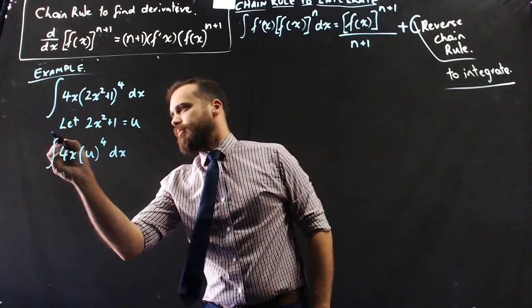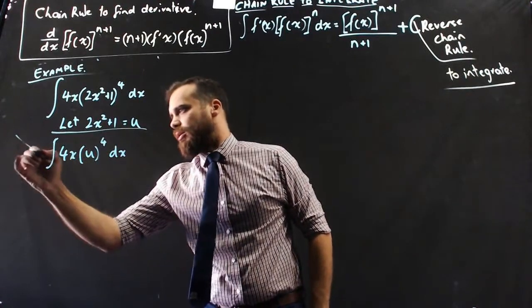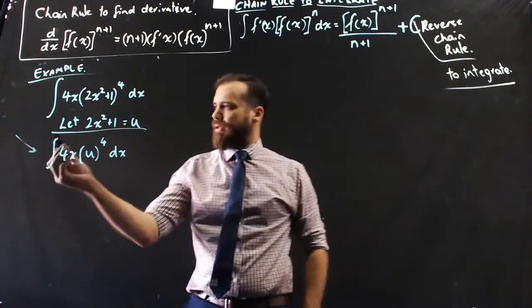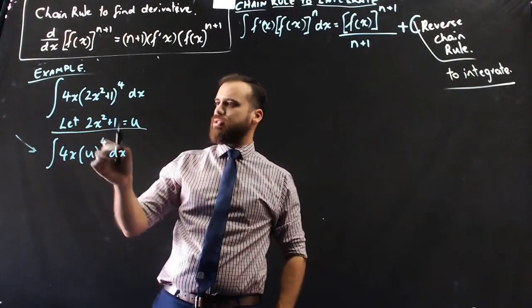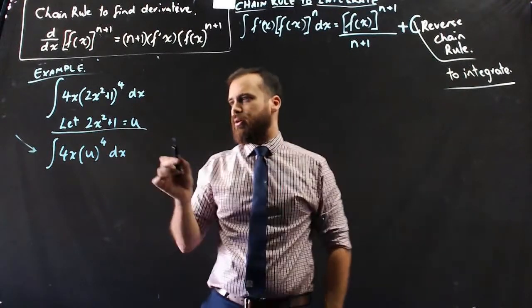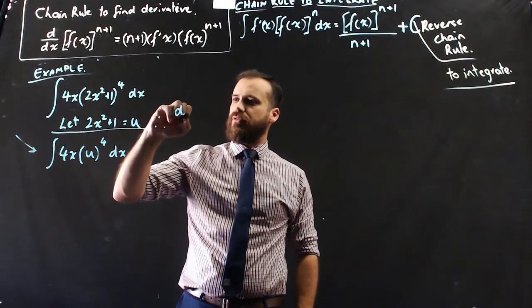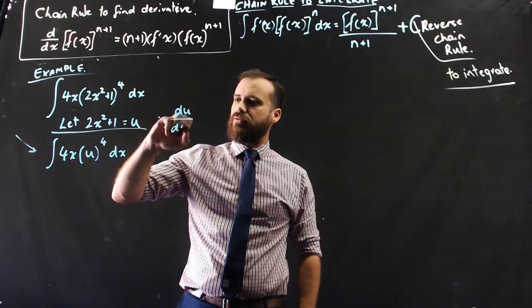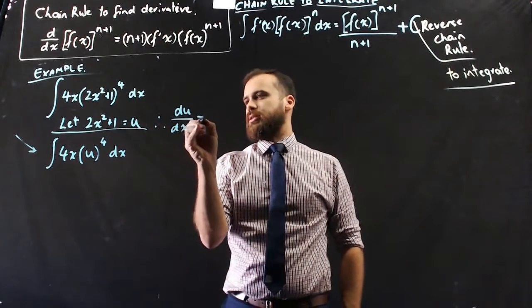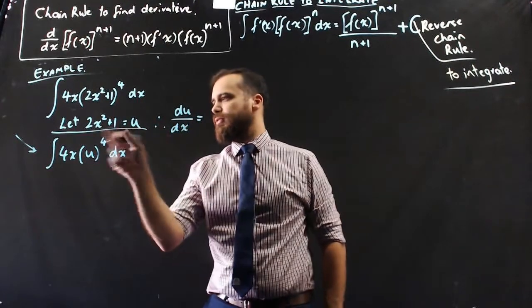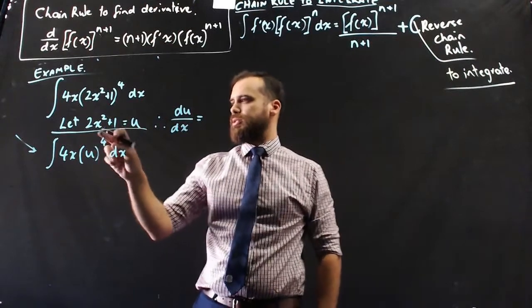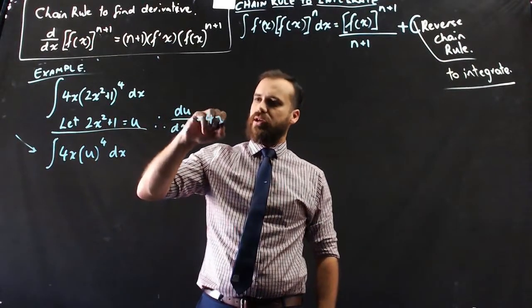So, I'm going to pull up here. I wouldn't copy that down yet. I'm going to pull up here. I'm going to say, let 2x squared plus 1 equal u. Now, then I can say, therefore, the derivative of u with respect to x is equal to the derivative of u with respect to x. It's just the derivative of that, which is 4x.